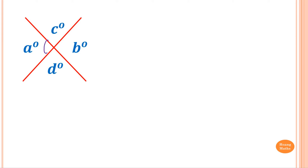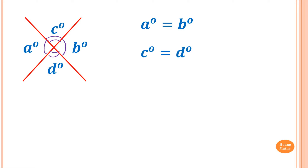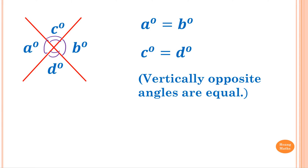This angle here is equal to this angle, so angle A is equal to angle B. And this angle here is equal to this angle, so angle C is equal to angle D. The reason for this is vertically opposite angles are equal.